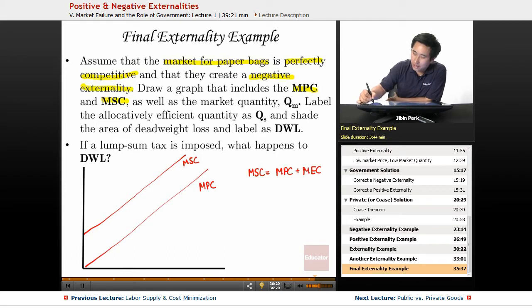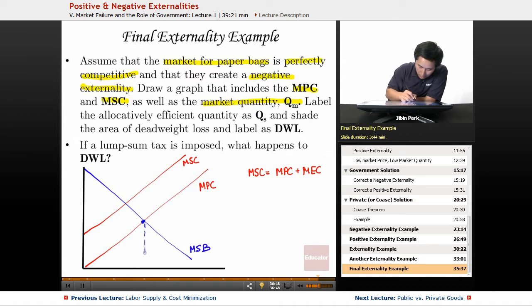The smaller one is going to be the marginal private cost, and this is the marginal social cost. Now, to find the market quantity Qm, you need to have the marginal social benefit. So the marginal social benefit intersects with marginal social cost here - this is the Qm. It doesn't say to necessarily label the Pm, but it doesn't hurt to do that.